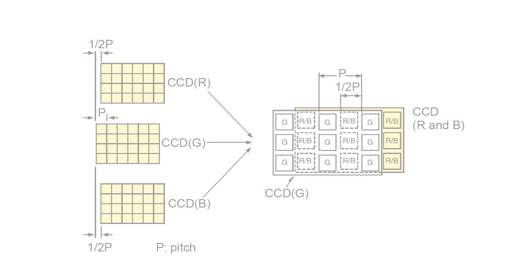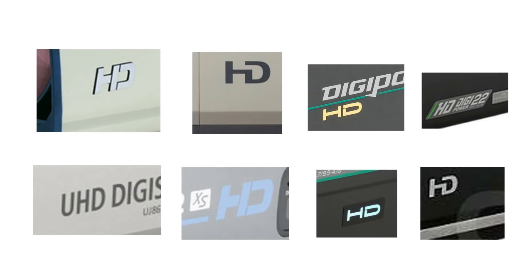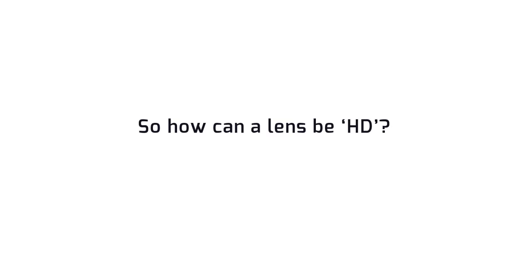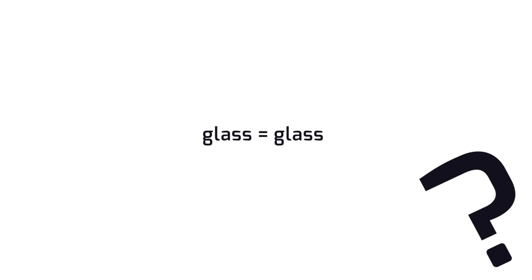That's another expensive manufacturing process that impacts on the cost of these types of cameras. By looking at professional lenses, you'll see a lot of this. So how can a lens be HD, and why weren't standard definition lenses good enough? After all, glass is glass, isn't it? Not exactly.